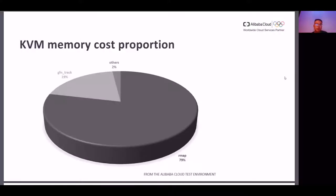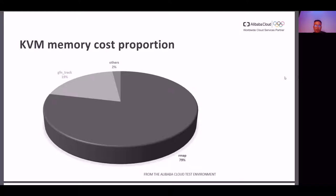This is the proportion picture of the KVM memory cost. The test VM with 2M huge pages is from Alibaba Cloud test environment. It can be seen from this picture that RMAP occupied 79% of the memory cost. The GFN tracker occupies 19%. The others only occupy 2%. So the object of the optimization is RMAP and GFN tracker.